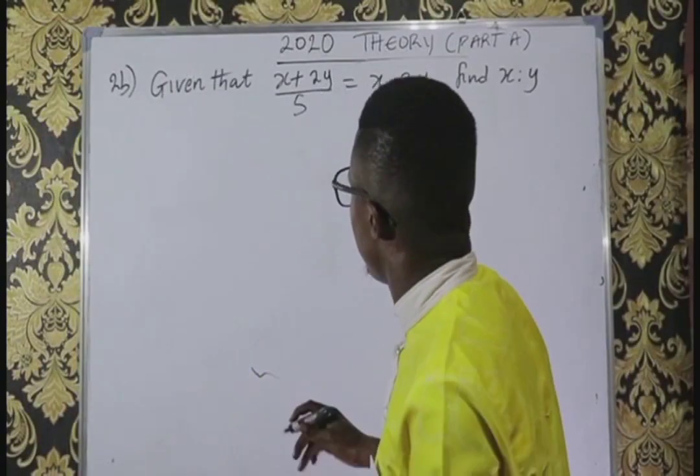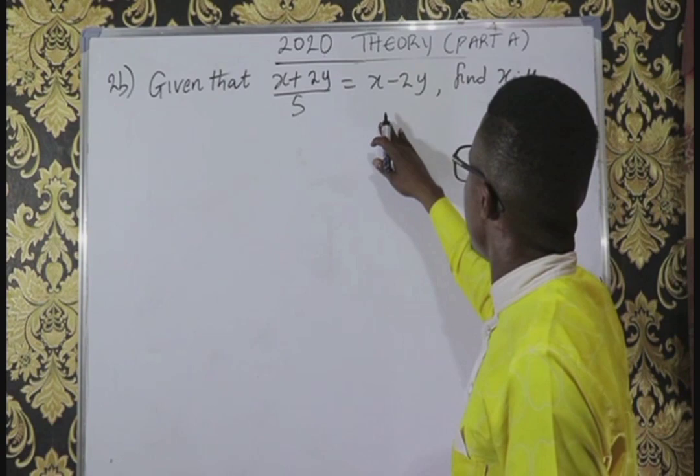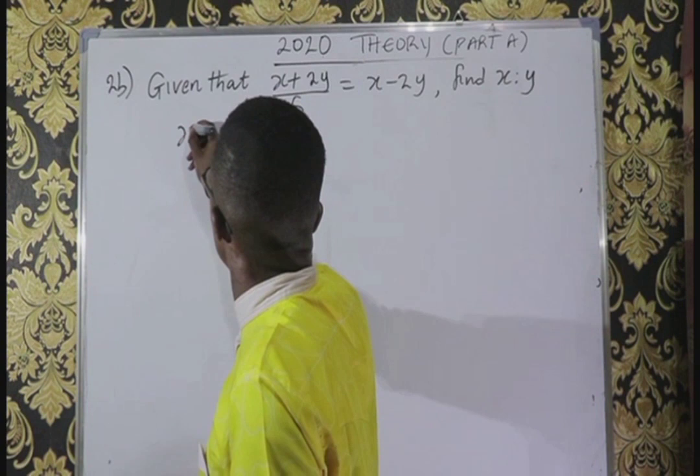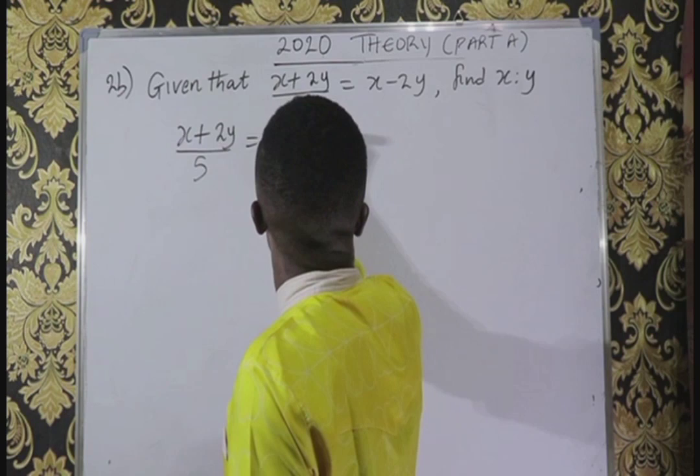Number 2b says: given that x plus 2y over 5 is equal to x minus 2y, find x is to y. So we have x plus 2y all over 5 is equal to x minus 2y.